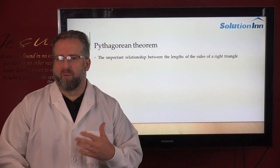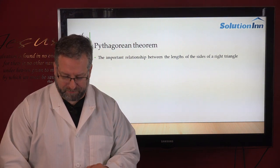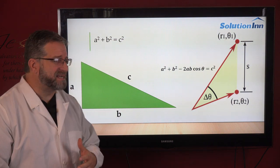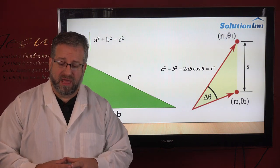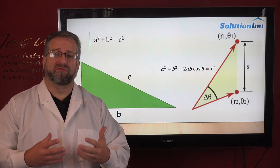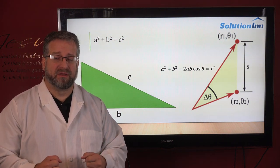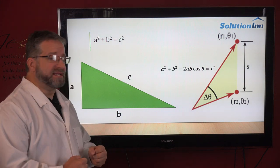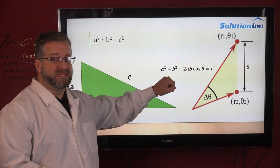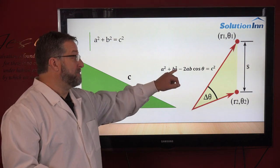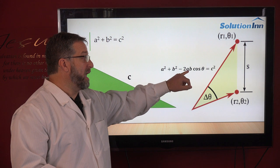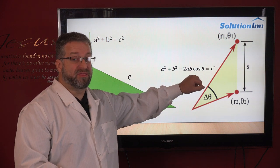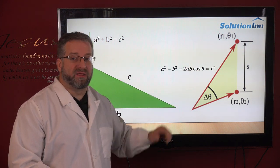But how do we apply it? What does it look like? The theorem is actually a simplified version of the Law of Cosines. The Law of Cosines states that a squared plus b squared minus 2ab cosine theta equals c squared.